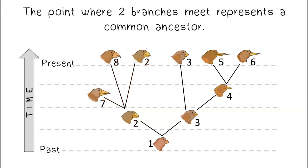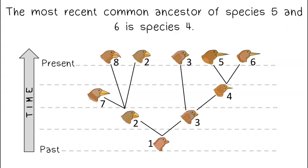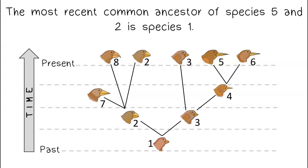The point where two branches meet represents a common ancestor. The most recent common ancestor between any two species is the point where they connect on the tree. The most recent common ancestor of species five and six is species four. The most recent common ancestor of species five and two is species one.